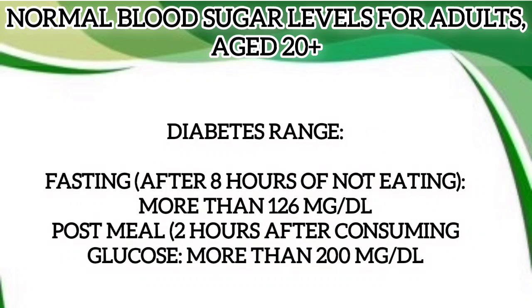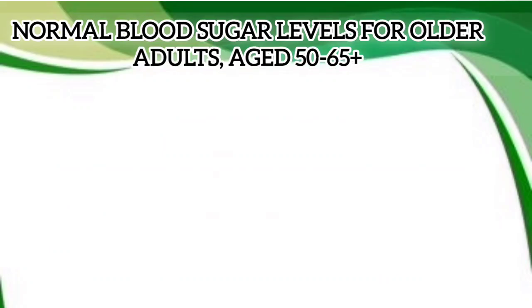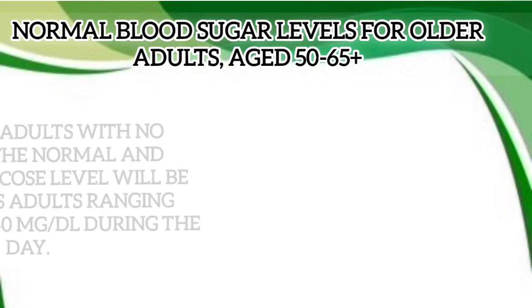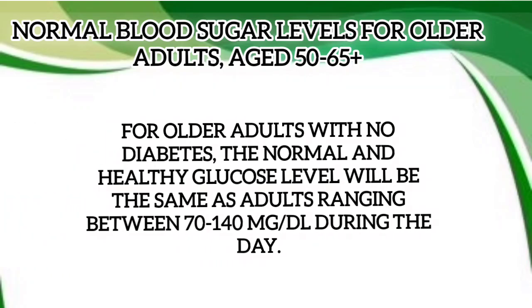Diabetes range: fasting after 8 hours of not eating, more than 126 mg/dL; post-meal 2 hours after consuming glucose, more than 200 mg/dL. Normal blood sugar levels for older adults aged 50-65+: for older adults with no diabetes, the normal and healthy glucose level will be the same as adults, ranging between 70-140 mg/dL during the day.